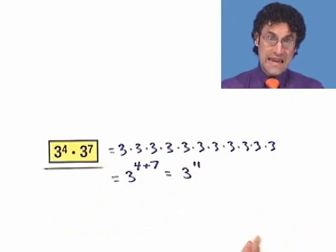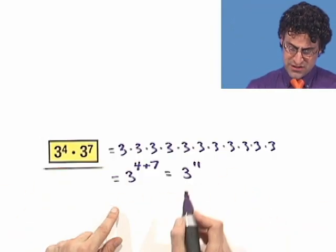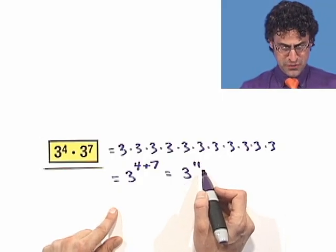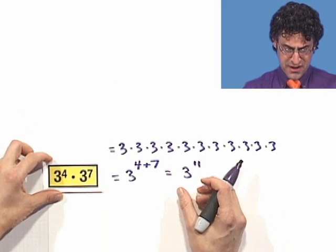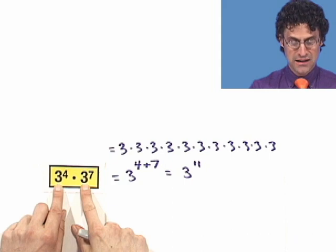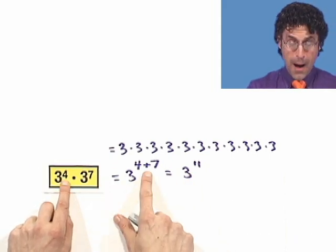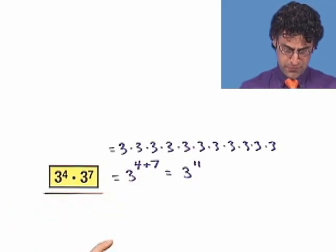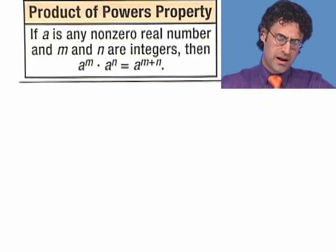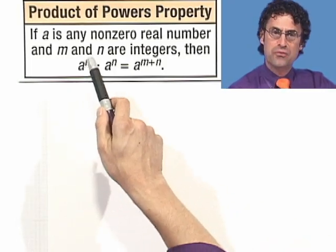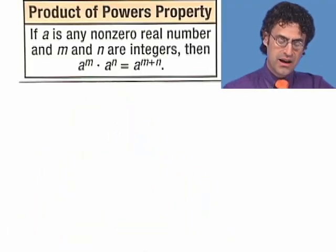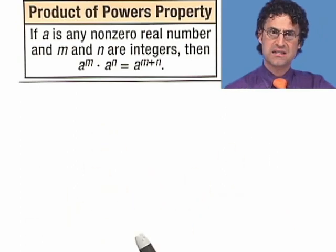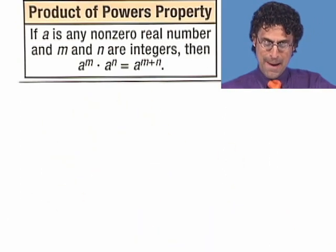When in doubt, write it out, and you'll see how many threes you have — 11 factors of 3. The formula is: if you're multiplying two numbers that have the exact same base, the answer will be that base raised to the sum of the exponents. That's the inspiration for the Product of Powers property. It says: if a is any non-zero real number and m and n are integers, then a to the m times a to the n equals a to the m plus n.